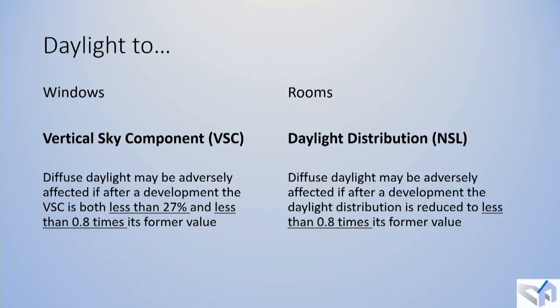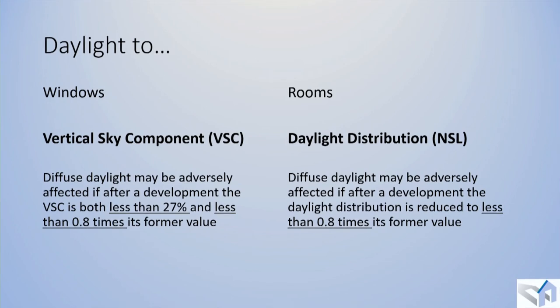The Vertical Sky Component is our main test — a measure of visible sky from the centre of a window. The BRE Guide states that diffuse daylight may be adversely affected if after development the VSC is less than 27% (the absolute test) and less than 0.8 times its former value — in other words, more than a 20% loss. This 20% threshold is used across all the tests, so you can allow up to a 20% loss to a neighbour's light before it's impacted under the BRE Guide.